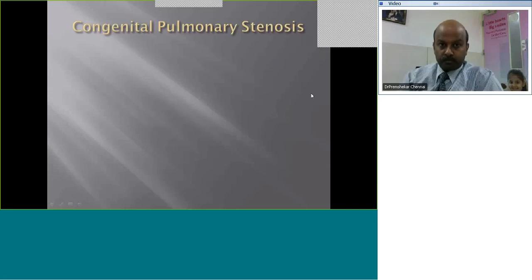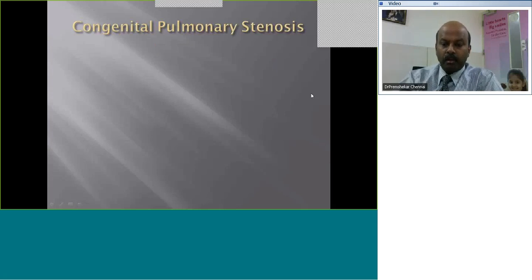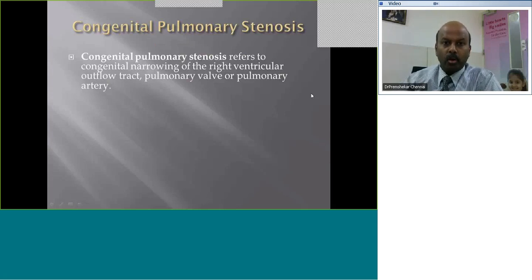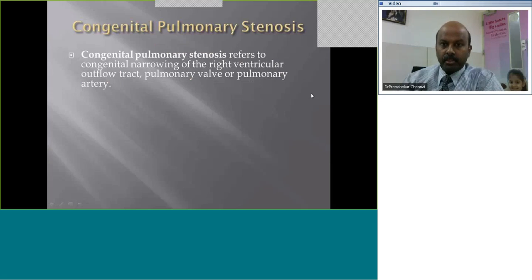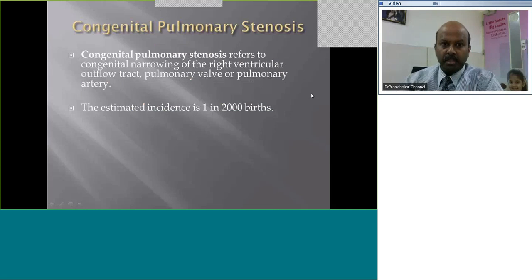When we talk about congenital pulmonary stenosis, we commonly presume that we are referring to the pulmonary valve, whereas it is not really so. When we say congenital pulmonary stenosis, we allude to the entire outflow tract — the right ventricular outflow tract, the pulmonary valve, and the pulmonary artery. Any narrowing in any of these parts would be called congenital pulmonary stenosis. They can be together or they can be separate entities.